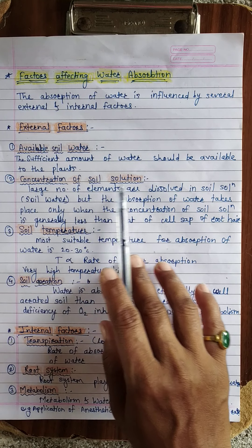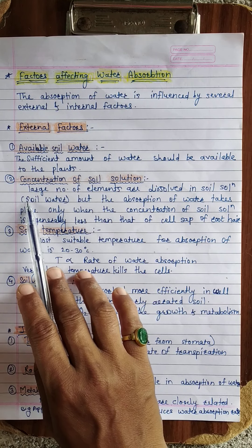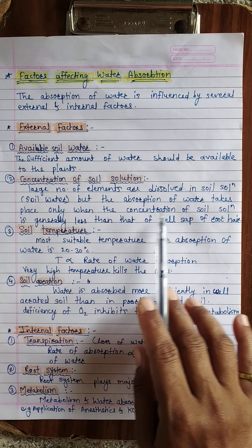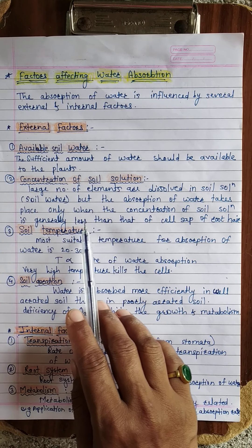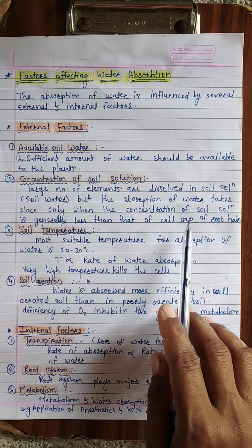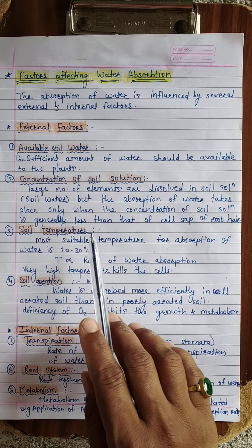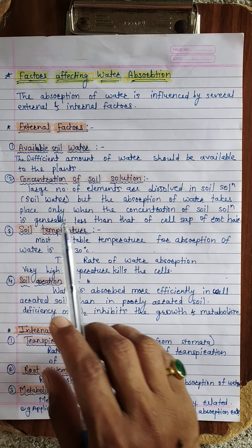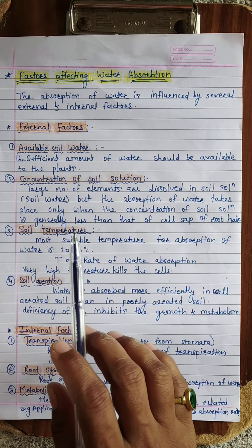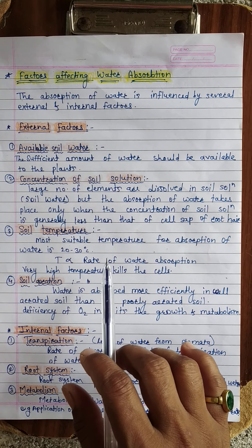The second external factor is concentration of soil solution. A large number of elements are dissolved in the soil solution, which is essentially soil water. Water absorption takes place only when the concentration of soil solution is less than that of the cell sap of root hair. If cell sap concentration is higher than the soil water concentration, then water absorption takes place.